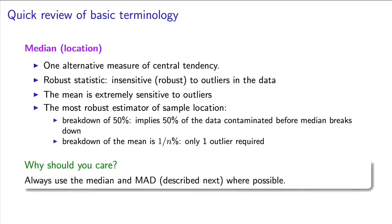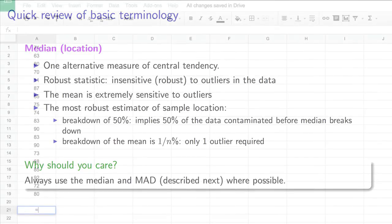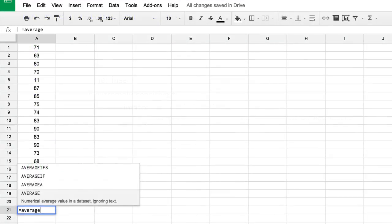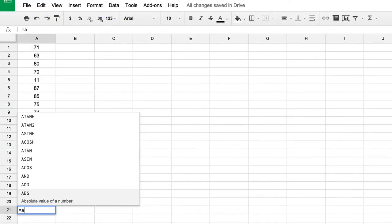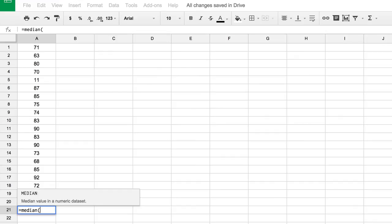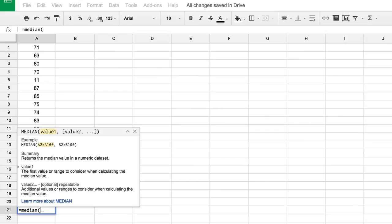I want to challenge you: in your work, use the median instead of the mean as a robust estimator. It is tough — we're so used to using the average. Historically, the median took a little longer to calculate because you had to sort the data first, but that reason doesn't exist anymore. We have ample computing power now to calculate medians.